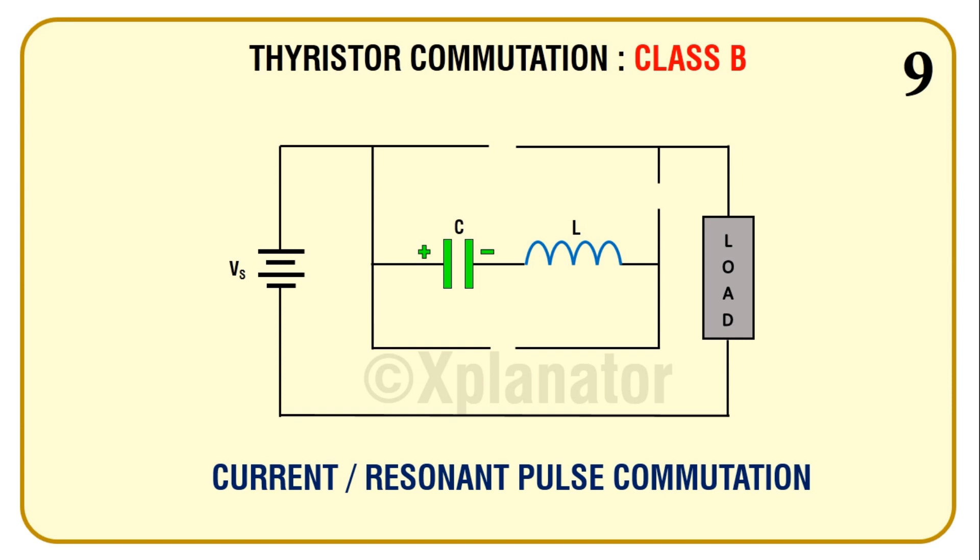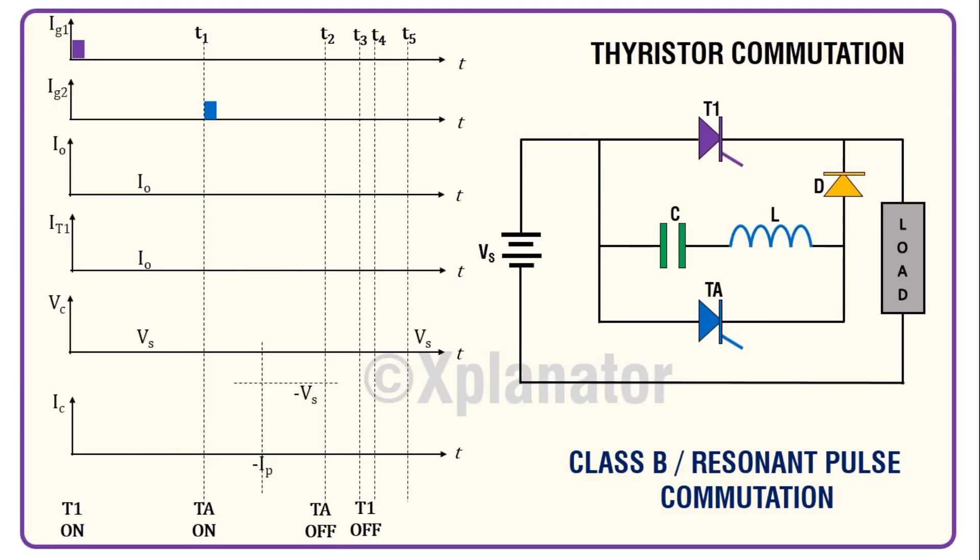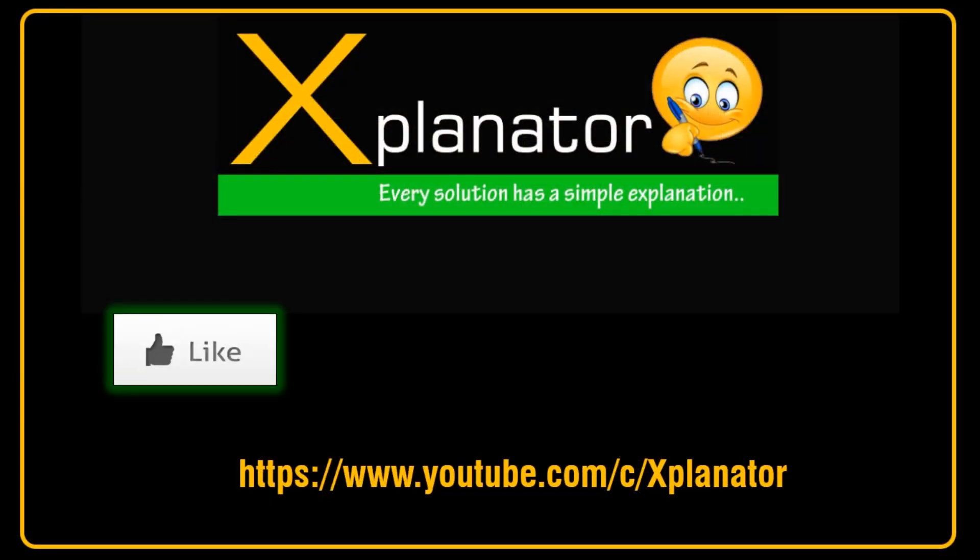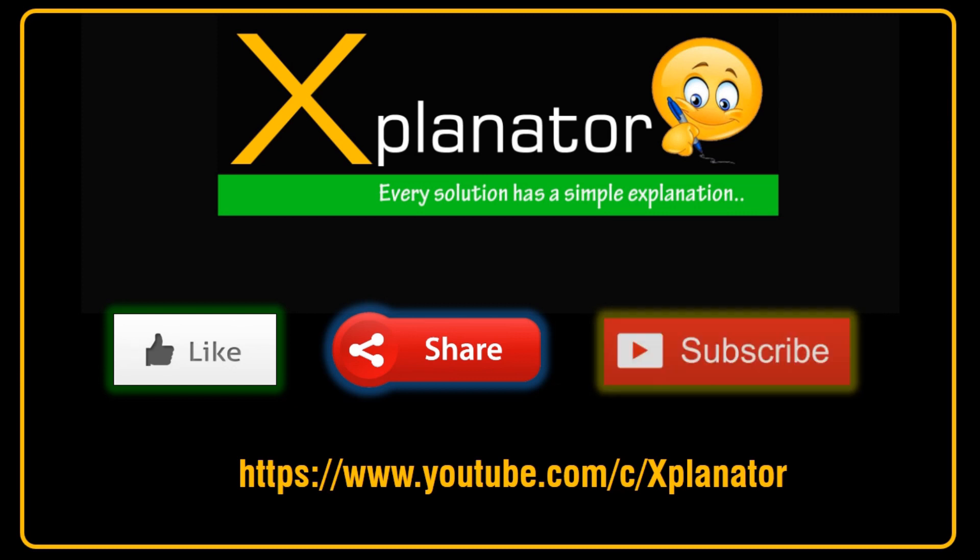As the thyristor T1 is commutated by a gradual buildup of resonant current in the negative direction, this method is also called current commutation or resonant pulse commutation. So that was about the working of Class B commutation circuit. In the next video, we shall plot the graphs for the same circuit. Until then, like, share, and subscribe to Explanator, because every solution has a simple explanation.